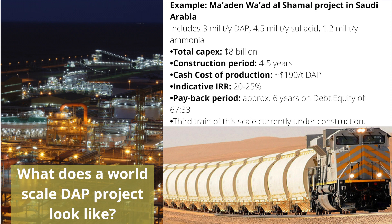This is especially relevant in the case of phosphates where the number of production sites is fewer than urea, for example. With the concentration of production in fewer countries, the responsiveness of the market can be limited, so we tend to see some sustained swings in pricing as a result.